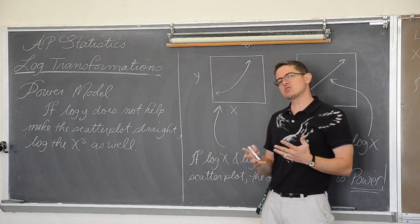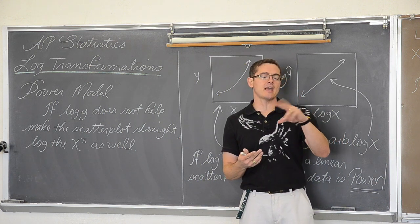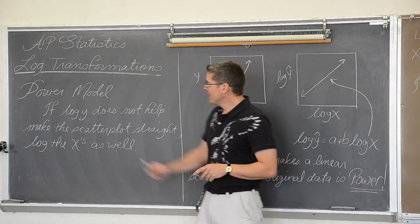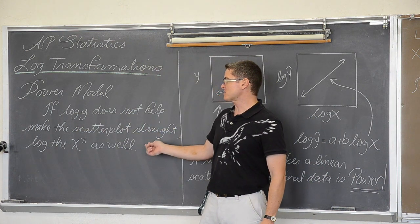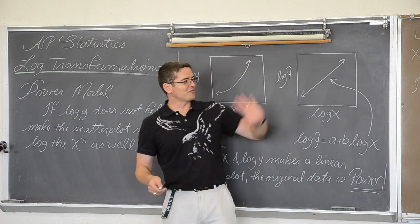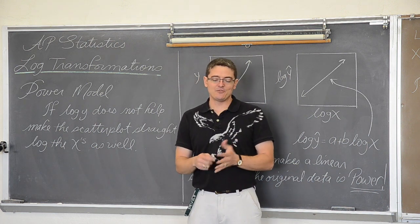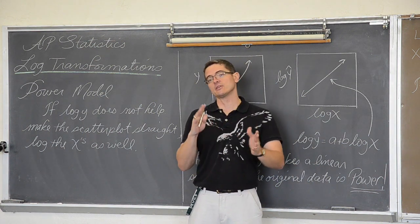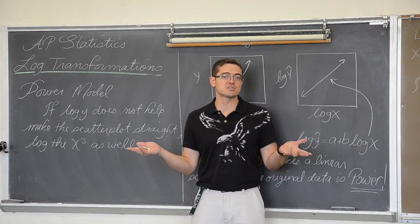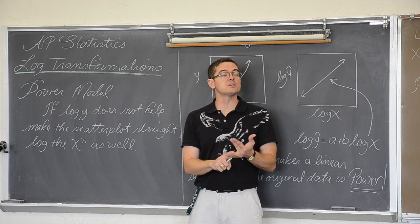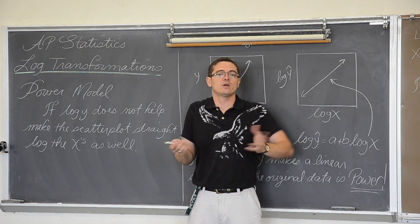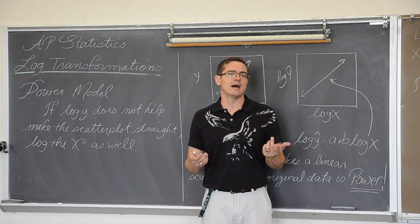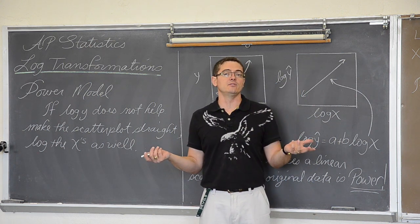So if it is exponential — if your growth or decay is exponential — all you have to do is log the y's to make that scatter plot straight. Now we are going to talk about a power model. So if logging the y does not help make the scatter plot straight, then you are also going to have to log the x's. If you log the y's and you did not get a linear pattern, then it is not exponential. If you then also log the x's — so now the x's and the y's are both logged — and your scatter plot is still not straight, then your original data was not exponential nor was it power, and we are just stuck. You are going to be stuck talking about that curved pattern, discussing the form, direction, strength, and any outliers, and just describing what you see. You will not be able to do any math analysis to it.